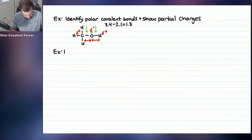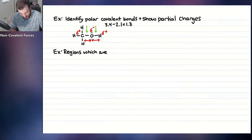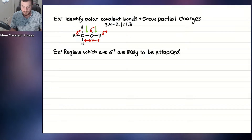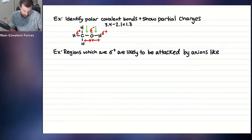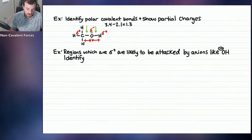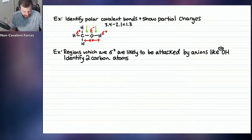Let's word another question differently. Regions which are delta plus — partially positively charged — are likely to be attacked by anions, like hydroxide. That makes sense: anions with a negative charge are attracted to positive or partial positive charges. So the question would say: identify two carbon atoms most likely to be attacked by hydroxide.